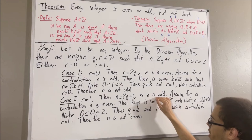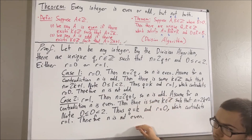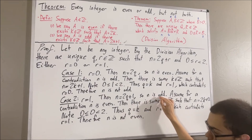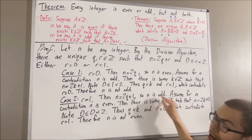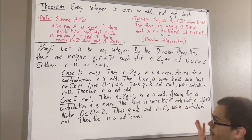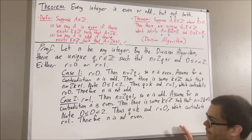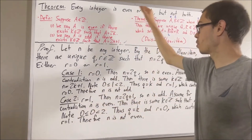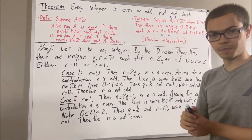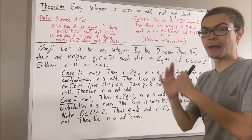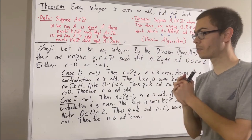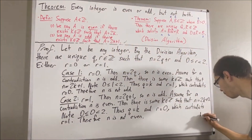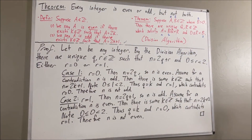We've shown that n is odd but not even. Therefore, we have shown n is even or odd, but not both. So we're done. In either case, we have shown that n is even or odd, but not both. Therefore that must be true, and that means we have completed the proof.